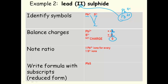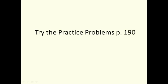Note the ratio: one lead ion to one sulfide ion. It's a 1 to 1 ratio. So the formula is Pb1S1, or simply PbS. We don't use the ones by convention. Try the practice problems on page 190.